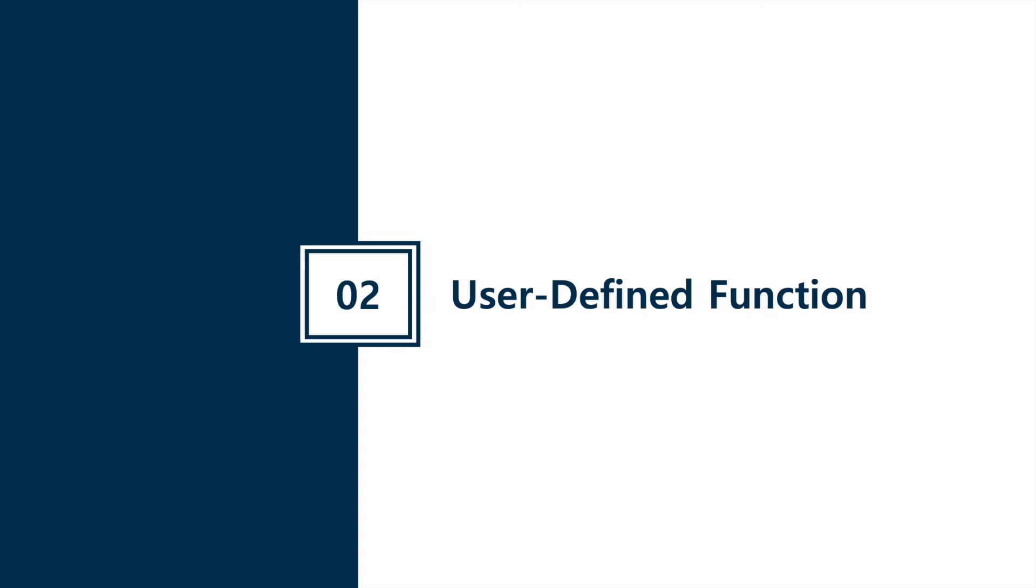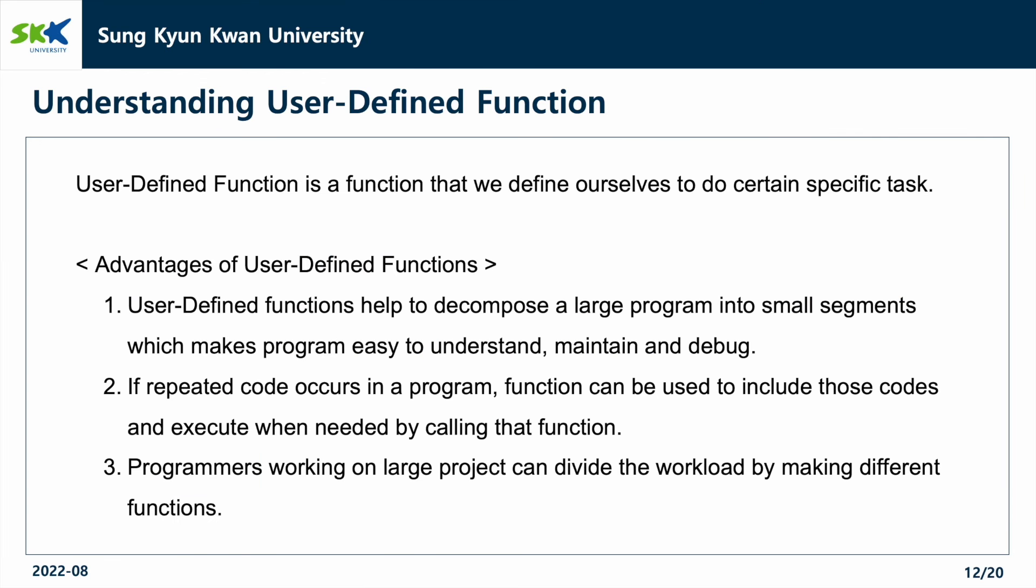Second, we will learn about user-defined functions. User-defined function is a function that we define ourselves to do certain specific tasks. Advantages of user-defined functions is that first, it helps to decompose a large program into small segments which makes the program easy to understand, maintain, and debug. Second, if repeated code occurs in a program, function can be used to include those codes and execute when needed by calling that function. Last, programmers working on large projects can divide the workload by making different functions.